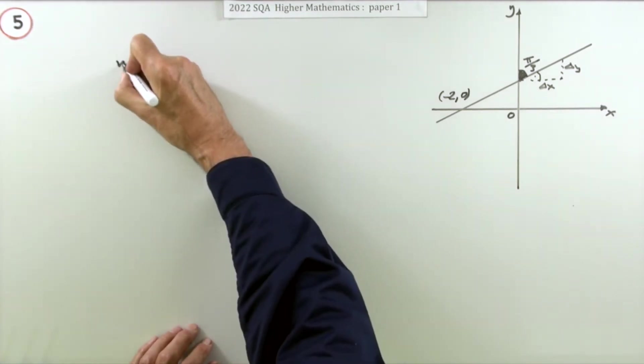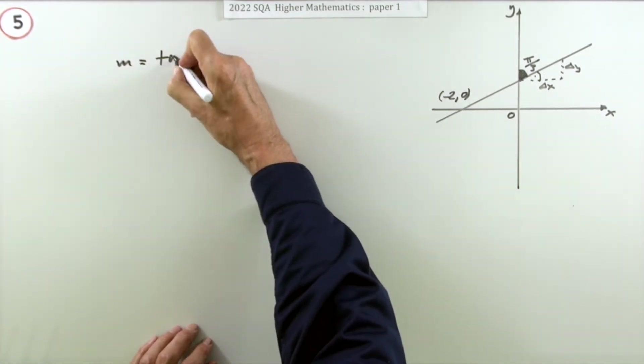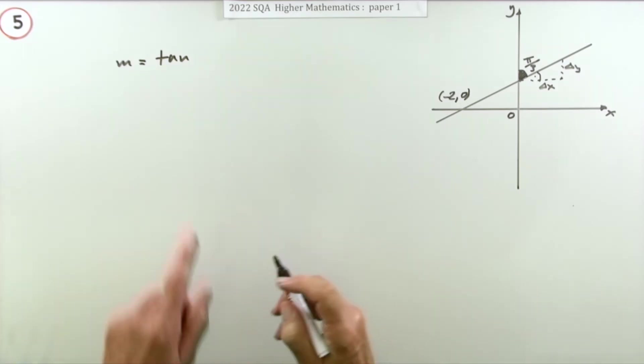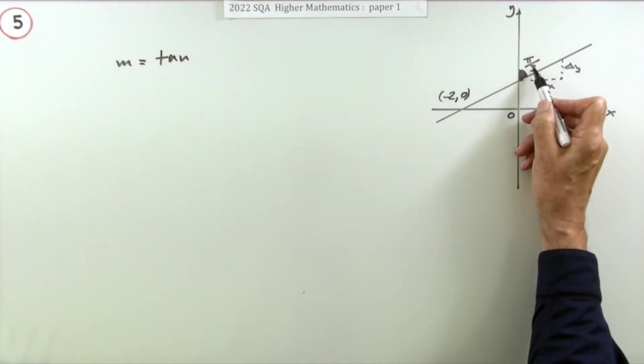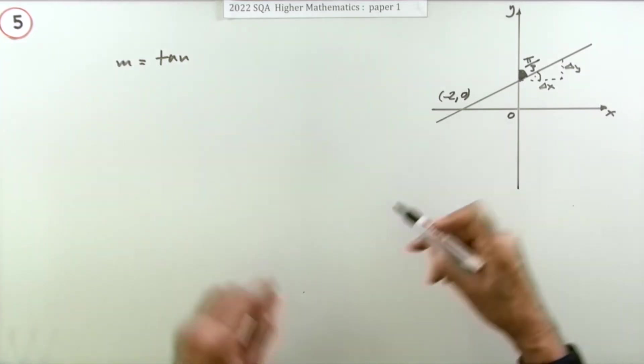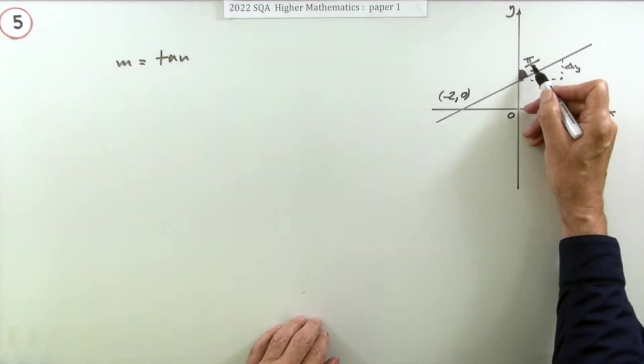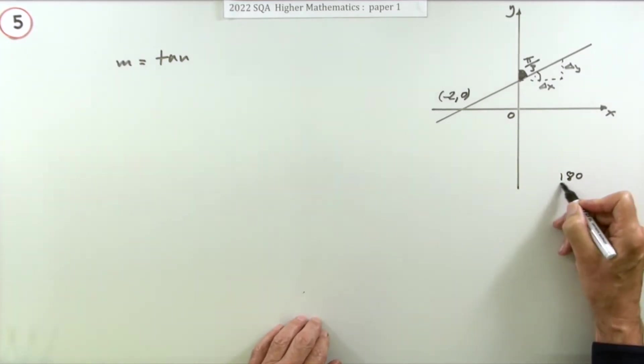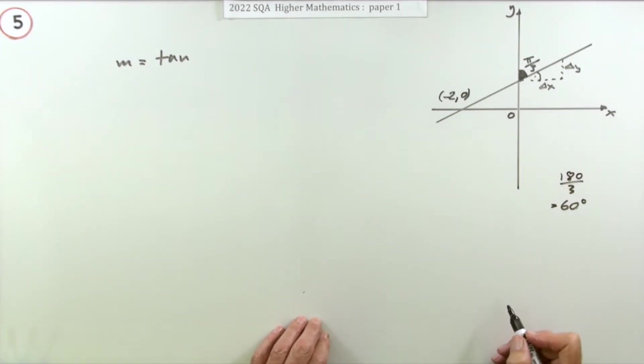So the first step is: the gradient is going to be the tangent of the angle. But it's not π/3—you have to watch. You can always do it in degrees and then translate it afterwards. π/3 is 180/3, that's 60 degrees, which means that should be 30 degrees.